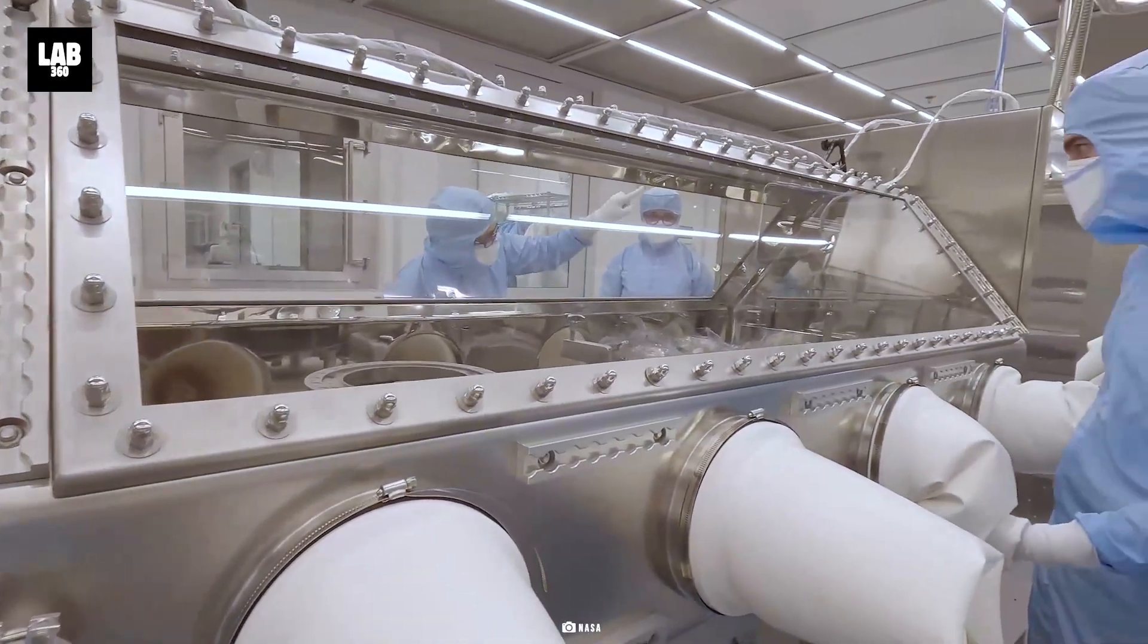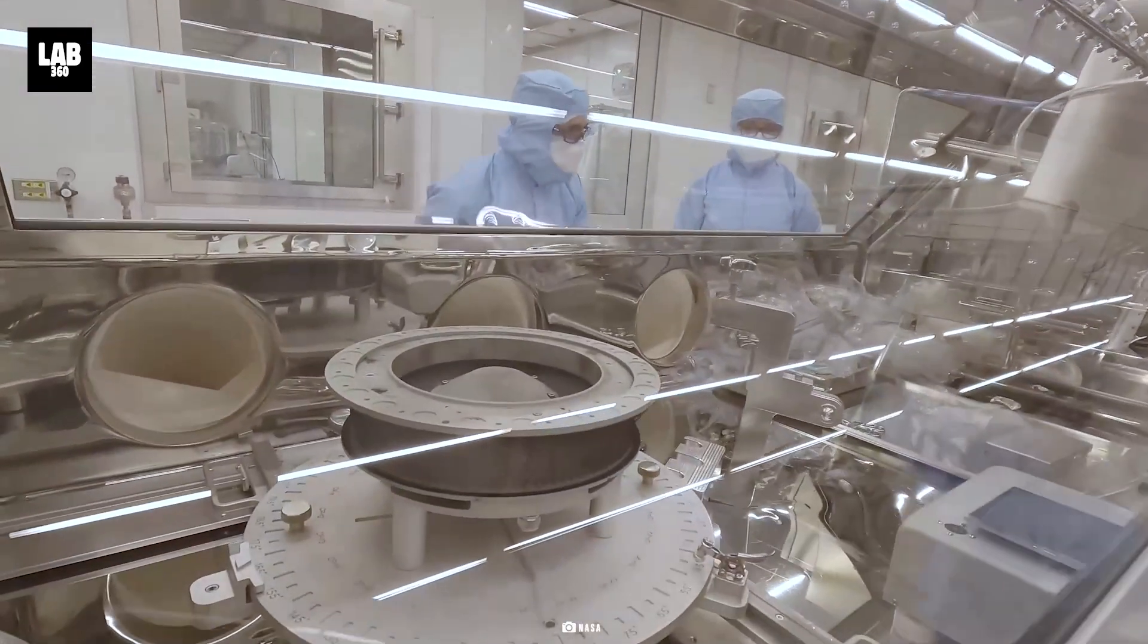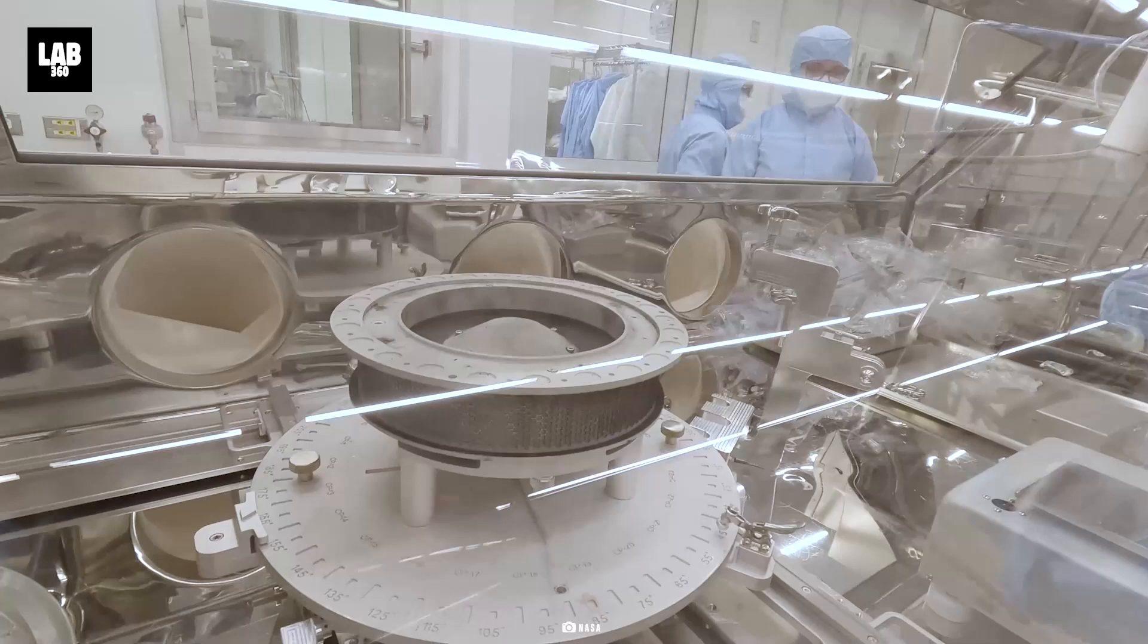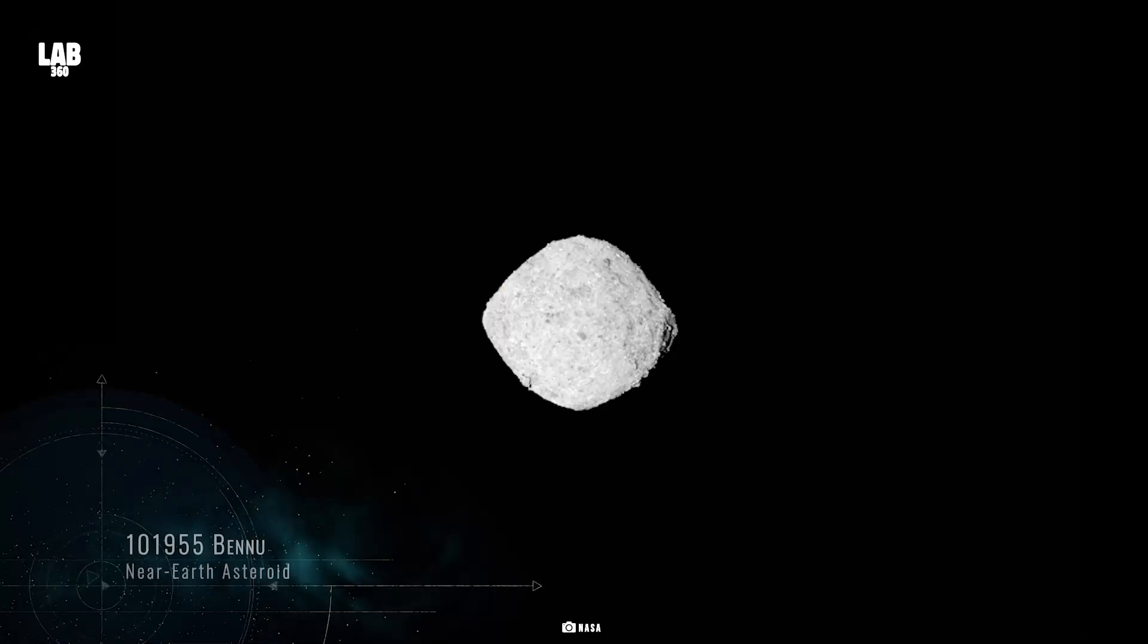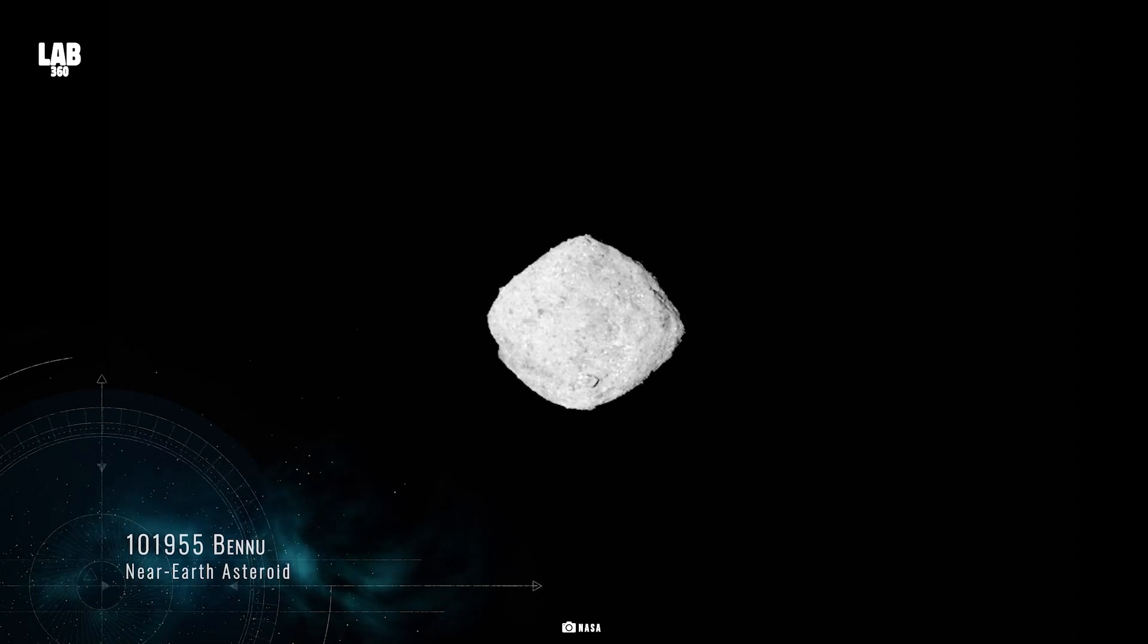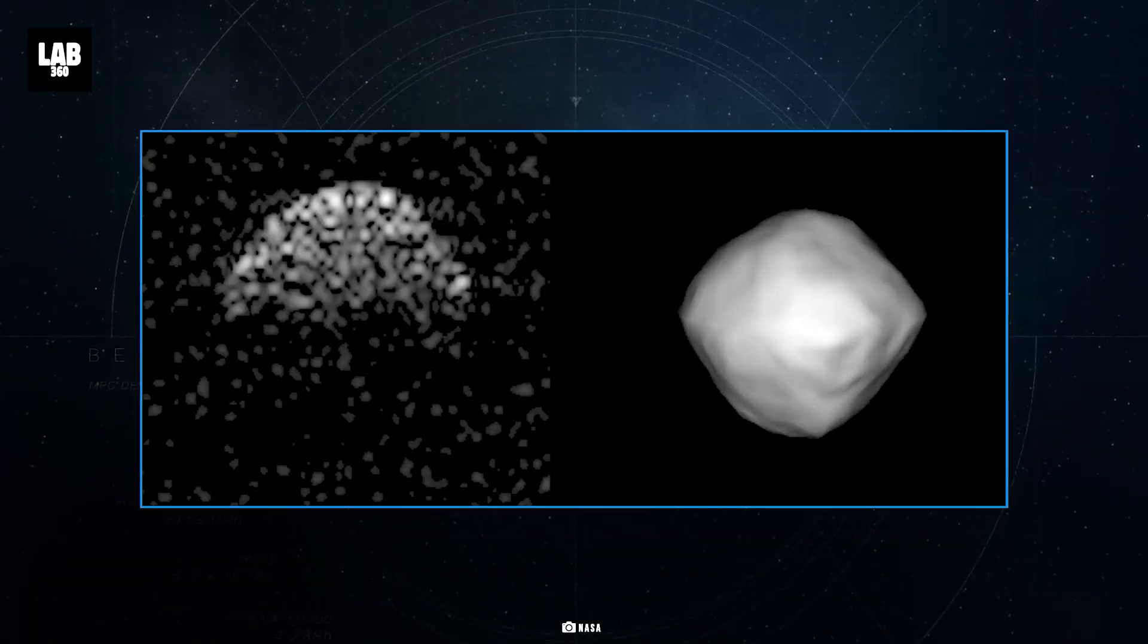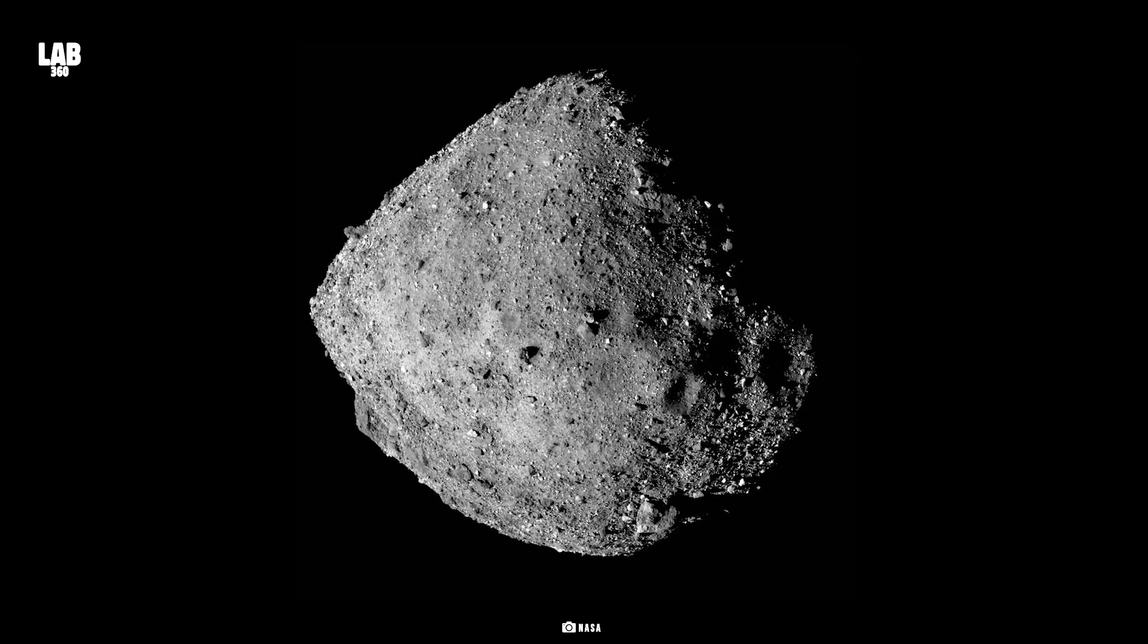The team of scientists is currently studying 25% of the material to gather information for future robotic and human missions. The study will further help NASA to determine Bennu's physical and chemical properties, in case of an impact mitigation mission.